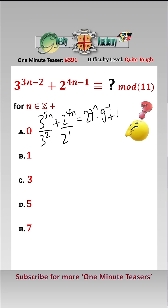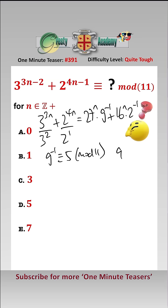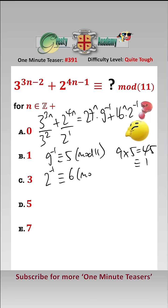Now 9 to the minus 1 is equal to 5 mod 11, because 9 times 5 is 45 and that equals 1 mod 11, so 9 is the inverse of 5. And 2 to the minus 1 is equal to 6 mod 11, because 2 times 6 is equal to 12, which equals 1 mod 11, so 6 is the inverse of 2 mod 11.